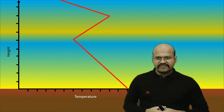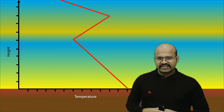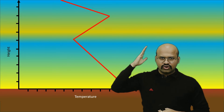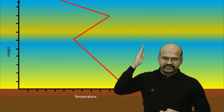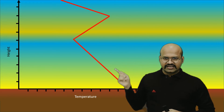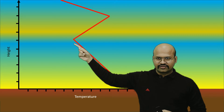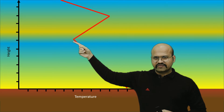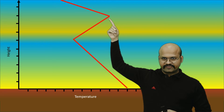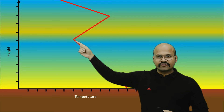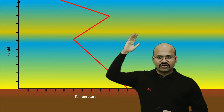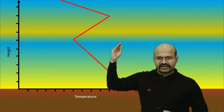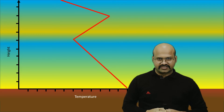If there is a situation where a warm layer of atmosphere lies above a cold layer, the temperature profile changes — instead of decreasing continuously, the temperature will start increasing again at that boundary. This phenomenon, where warm air lies above cold air, is called temperature inversion.